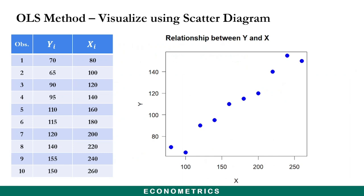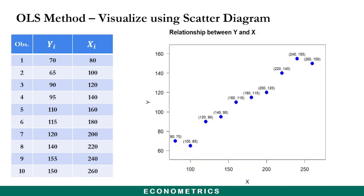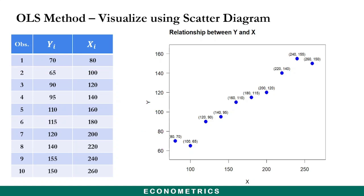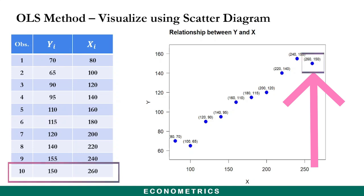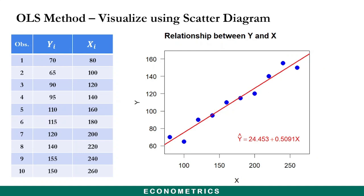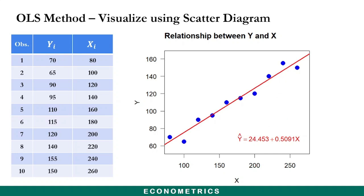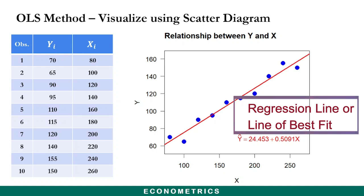The relationship between the dependent variable and the independent variable can be depicted in a graph called the scatter plot, where each point represents an observation. For example, the first observation for y and x is 70 and 80, represented by the corresponding point on the graph, and the 10th (last) observation has y equal to 150 and x equal to 260. The regression equation we estimated can be drawn on this scatter diagram as a straight line passing through the middle of the points — known as the regression line or line of best fit.